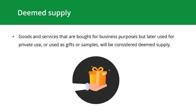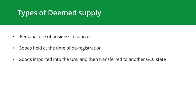Let's dive deeper into deemed supplies as it's very crucial for most business owners. There are three main types of deemed supplies: personal use of business resources, goods held at the time of deregistration, and goods imported into the UAE and then transferred to another GCC state.